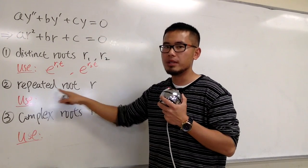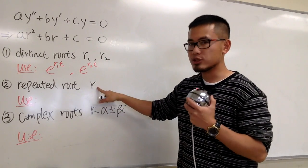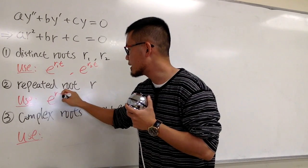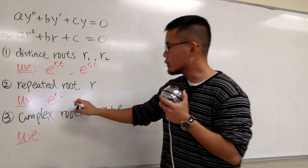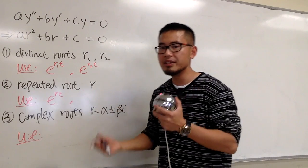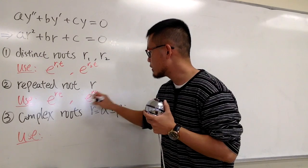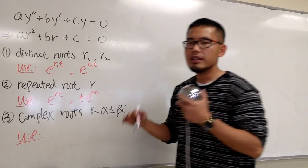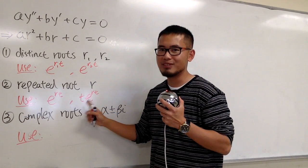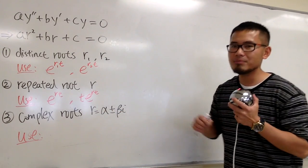The second situation: what if we have a repeated root, meaning the two r values are actually the same? We just call this r. The first building block is e^(r·t). For the second one, I'm not going to put down just e^(r·t) again because they will not be linearly independent. Instead, we multiply by t, giving us t·e^(r·t). You can check out my other video where I explain why we must have this t.